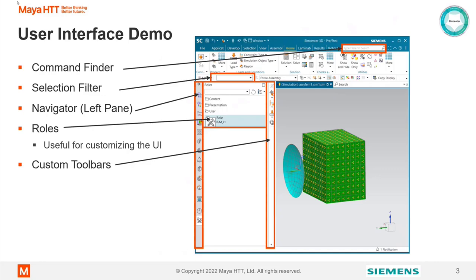We also have the navigators — those icons on the left. We can switch between those to get to different navigators: simulation navigator, post-processing, assembly, part, and roles. One thing I'm going to focus on is roles and how to create custom toolbars and associate them to a role. That allows you as a user to customize the UI and put icons where you want them.